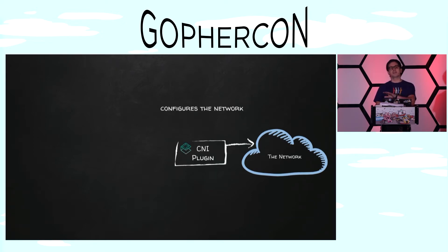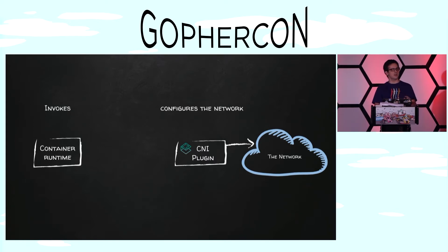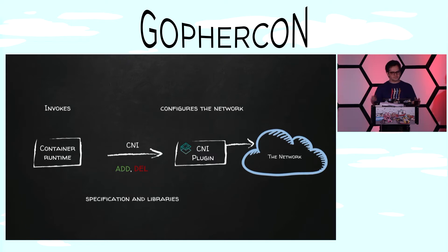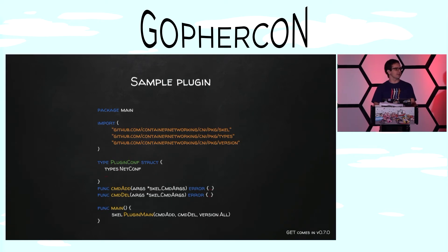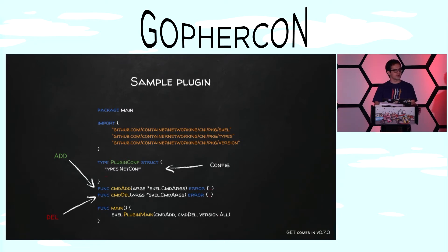It relies instead on a CNI plugin. A CNI plugin configures the network — from configuring the interface, allocating IP addresses, and routing. It's a function of the container runtime to invoke the CNI plugin. So CNI is this interface between these two elements. It is the specification and also a set of libraries to build CNI plugins. It started off with two commands to add and delete a network from a pod. Let's look at actual Go code. This is how the sample plugin looks like, and all of the plugins out there look just like this. The commands have a very specific signature and any configuration requirements for your network go as a field in this specific struct.